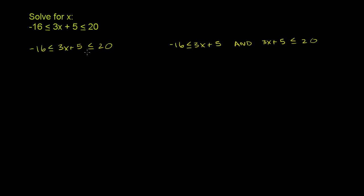We're going to solve it the exact same way in any situation — we just want to isolate x on one side of the inequality, or in this case, one part of the compound inequality. The best way to isolate x is to first get rid of this positive 5 in the middle, so let's subtract 5 from every part of this compound inequality.